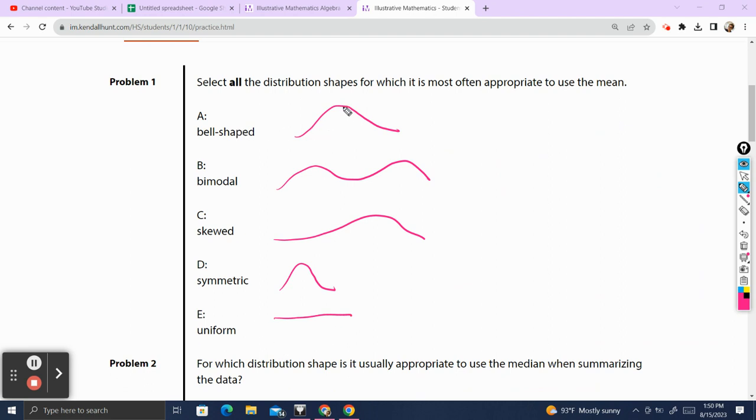So for a bell shape, when you have a symmetric distribution, the mean is a good option. When you have a bimodal distribution, the mean doesn't really get this point here or this point there and is not a good option to calculate the middle of the distribution. A skewed distribution, when you have a lot of data on one side and less on the other, is going to pull your mean towards the skew and it's not going to be a good measure of center.